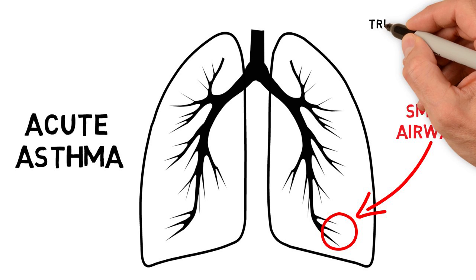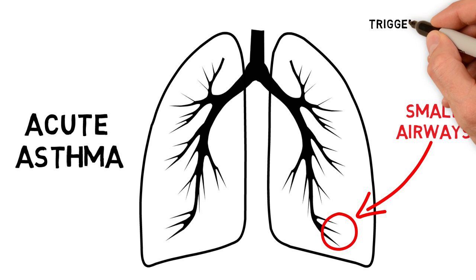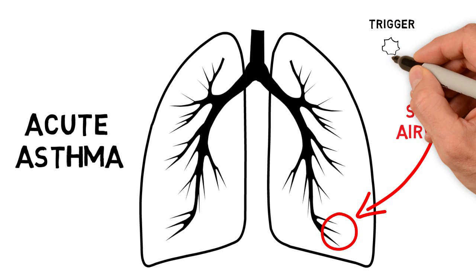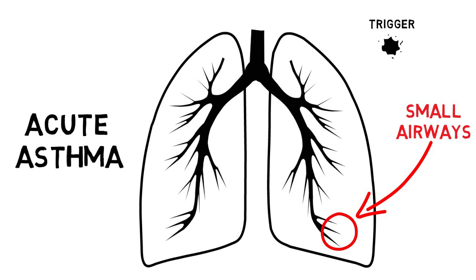Acute asthma is due to exposure to an environmental trigger, something like dust, animal dander, pollen, smoke, even exercise or respiratory infection.